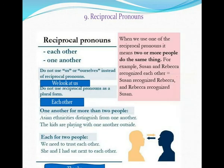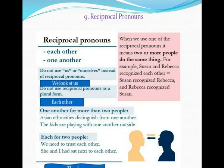Let us go to the last one — reciprocal pronouns. When we say reciprocal pronouns, it is something we need to understand carefully. When we use one of the reciprocal pronouns, it means two or more people do the same thing to each other. For example, 'Susan and Rebecca recognized each other' — both of them recognized one another. Susan recognized Rebecca and Rebecca recognized Susan. The reciprocal pronouns are 'each other' and 'one another'. We do not use 'us' or 'ourselves' in place of reciprocal pronouns.